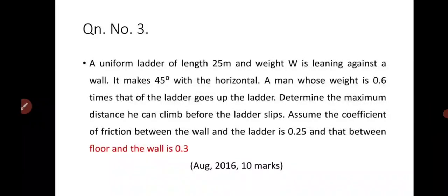Engineering Mechanics: Ladder Friction, Part 2. Question No. 3: A uniform ladder of length 25 metres and weight W is leaning against a wall. It makes 45 degrees with the horizontal. A man whose weight is 0.6 times that of the ladder goes up the ladder. Determine the maximum distance he can climb before the ladder slips. Assume the coefficient of friction between wall and ladder as 0.25 and that between floor and ladder as 0.3.